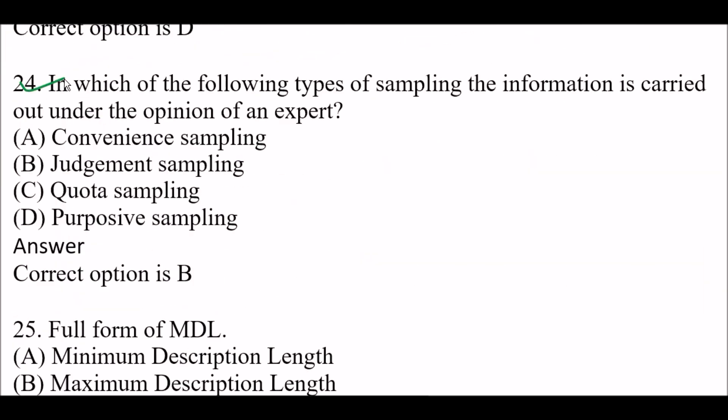Next question: In which of the following types of sampling is the information carried out under the opinion of an expert? Option A: Convenience sampling, Option B: Judgment sampling, Option C: Quota sampling, Option D: Purposive sampling. Right answer is Option B — judgment sampling.